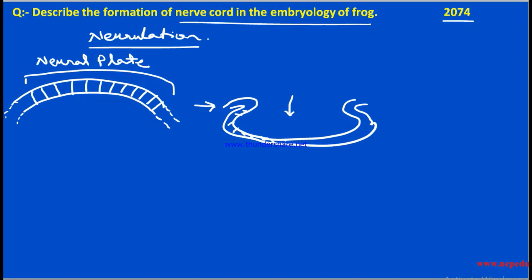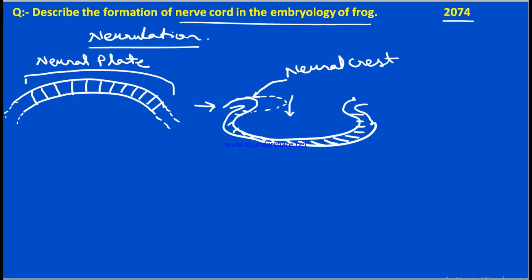The neural plate then separates itself from the ectoderm as a neural tube. This is the neural tube. The neural crest or neural fold is also formed here. This fold gradually grows in size.